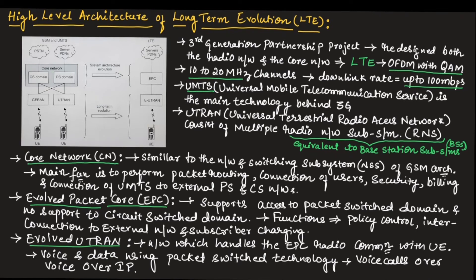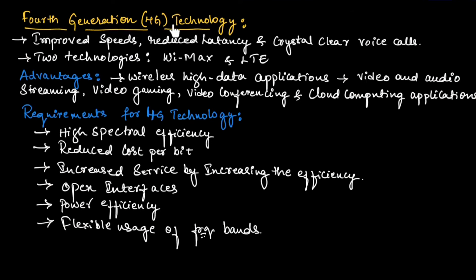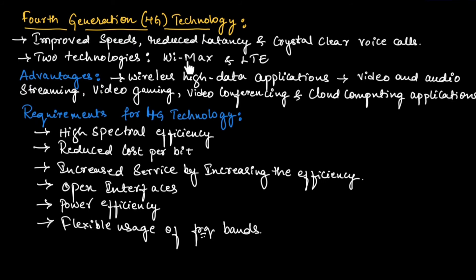Now let us understand fourth generation technology, which is 4G. 4G technology has mainly three benefits: improved speed, reduced latency, and crystal clear voice calls. It provided more speed compared to previous generations, with no delay in communication. It had two main technologies: WiMAX and LTE. WiMAX is an enhancement of previous fixed wireless standards for mobility.